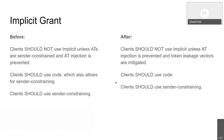Regarding the implicit grant, we didn't change too much, but we changed the wording. Before we wrote: 'clients should not use the implicit grant unless access tokens are sender-constrained and access token injection is prevented.' Now we have: 'clients should not use implicit unless access token injection is prevented, and token leakage vectors that were described beforehand are mitigated.'